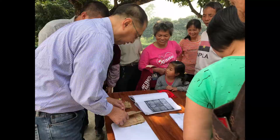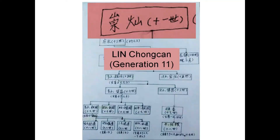They wrote out six generations and got back to a guy named Lin Chong-Chan who founded the village in 1707. What they wrote out was my great-grandfather getting back to Lin Chong-Chan. The document says right here: 11th generation — and that's the character for generation. Generation numbers are so important to the Chinese. I asked who is generation number one, and they said we don't know anything before him.